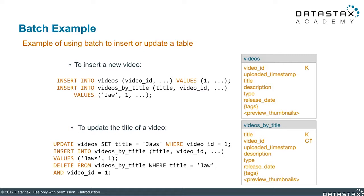If we were to do an update in this case, the write operation would either create a new row with a title column value of 'Jaws' or update an existing one with the same title and video ID. The original row with the title 'Jaw' and the video ID of one would still exist. Because of this, we actually need two operations: an insert so that there's a row with the updated information, and then a delete to remove the original row in videos_by_title. These statements shown here would be executed individually, meaning it's possible that one statement could succeed and the other fail, resulting in data inconsistency.